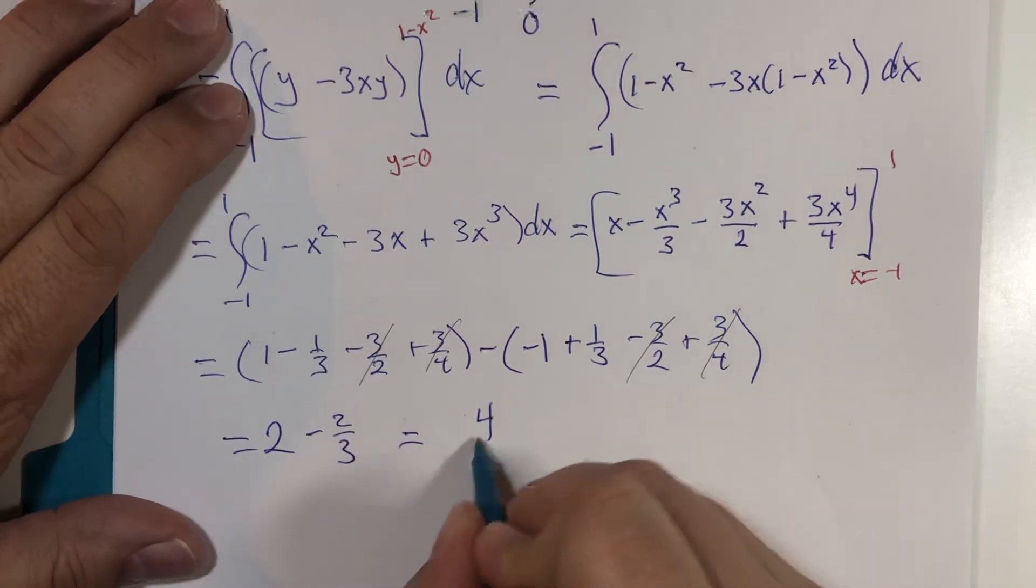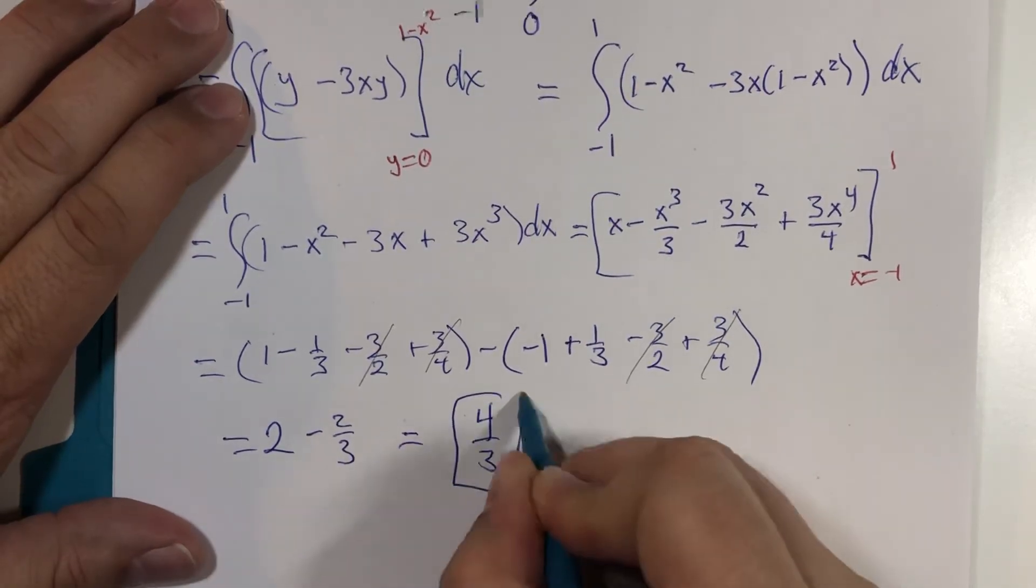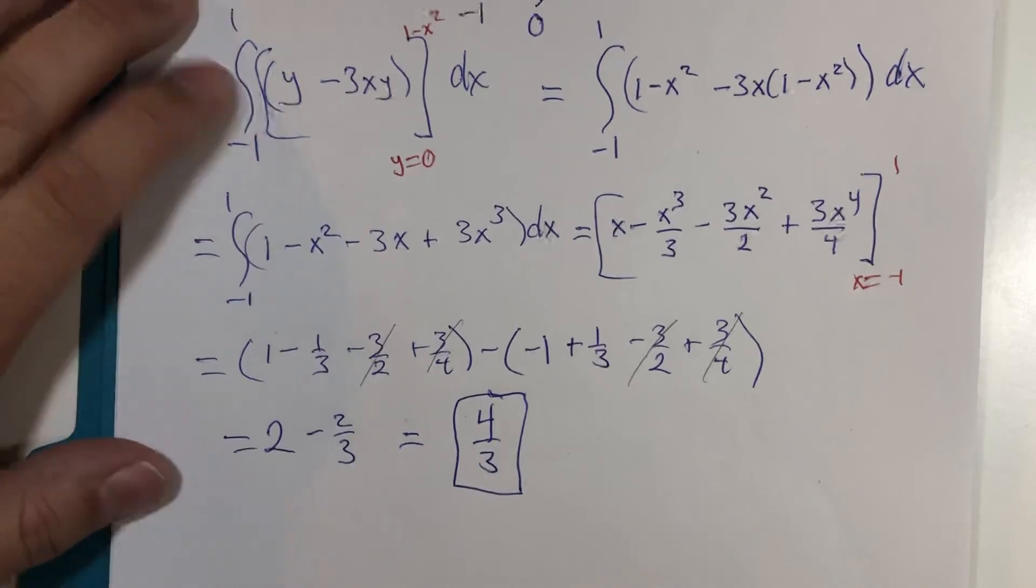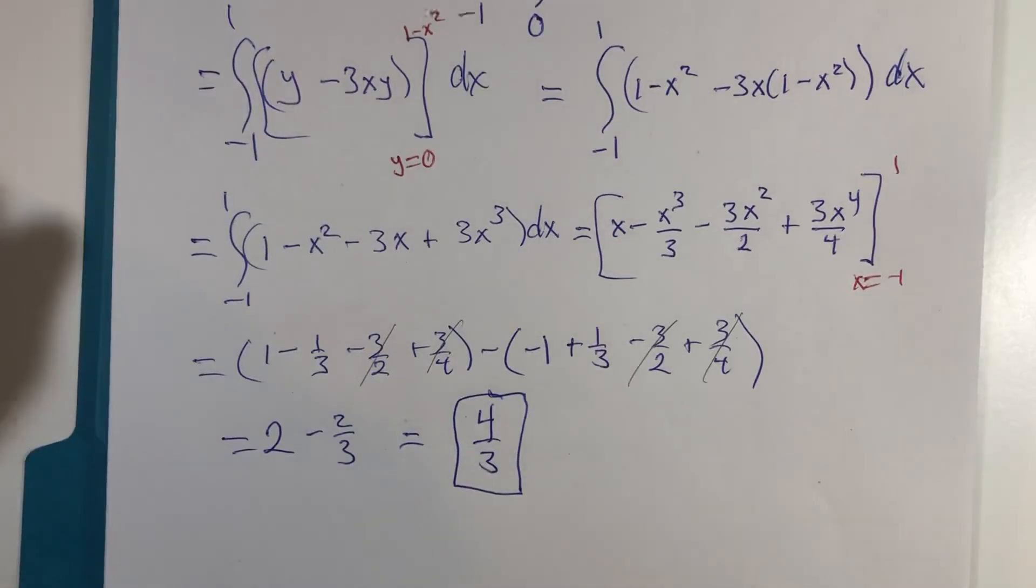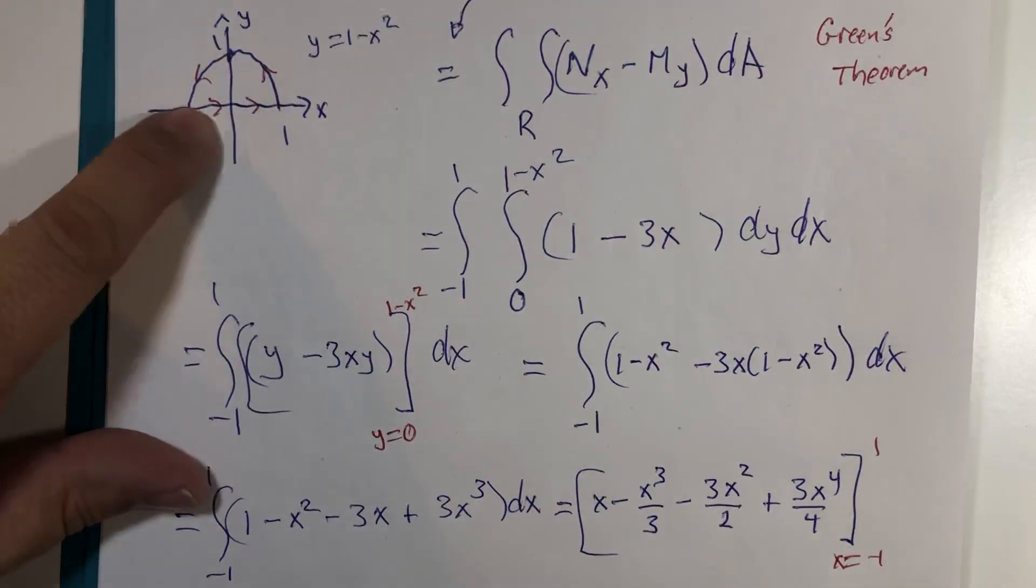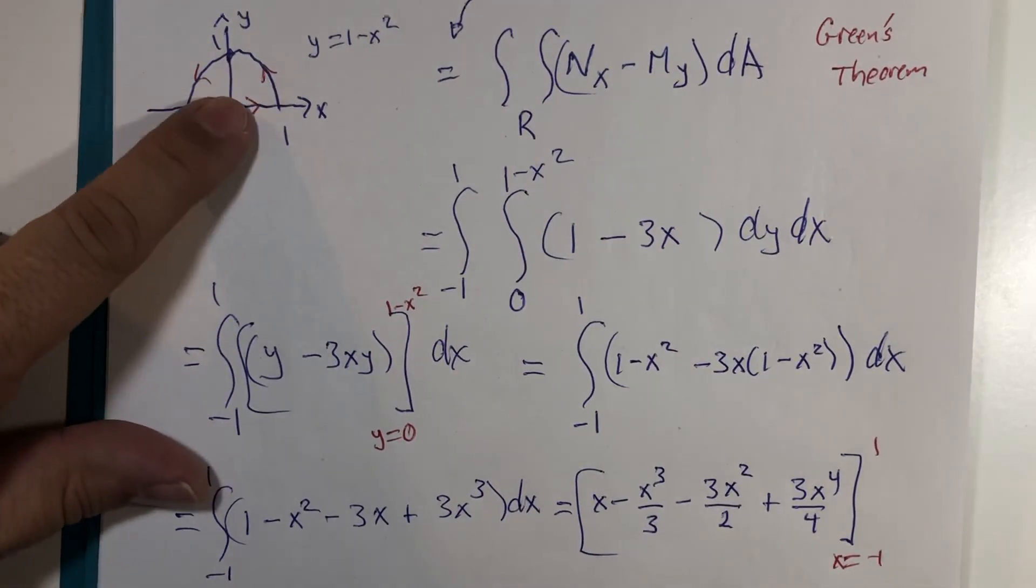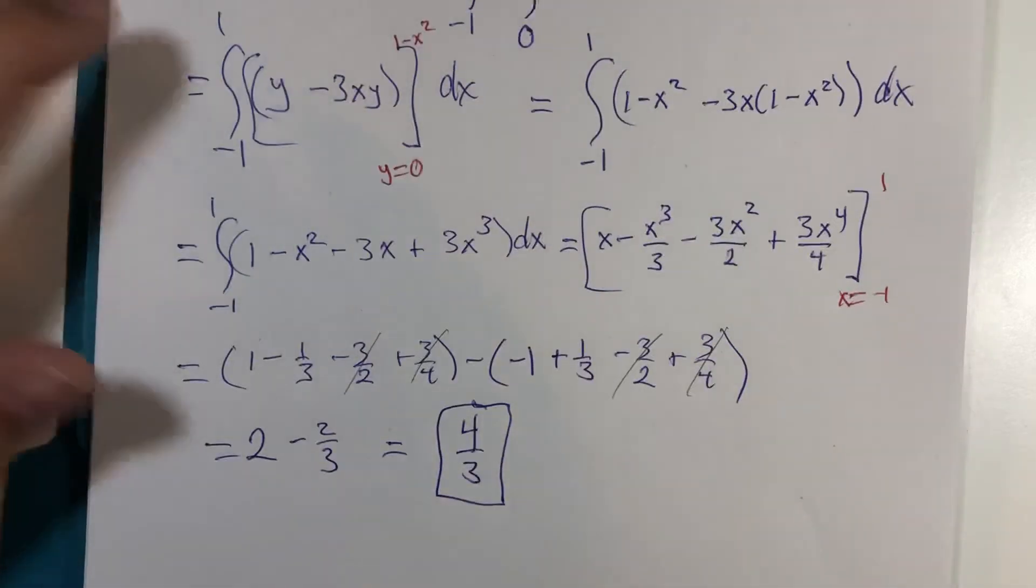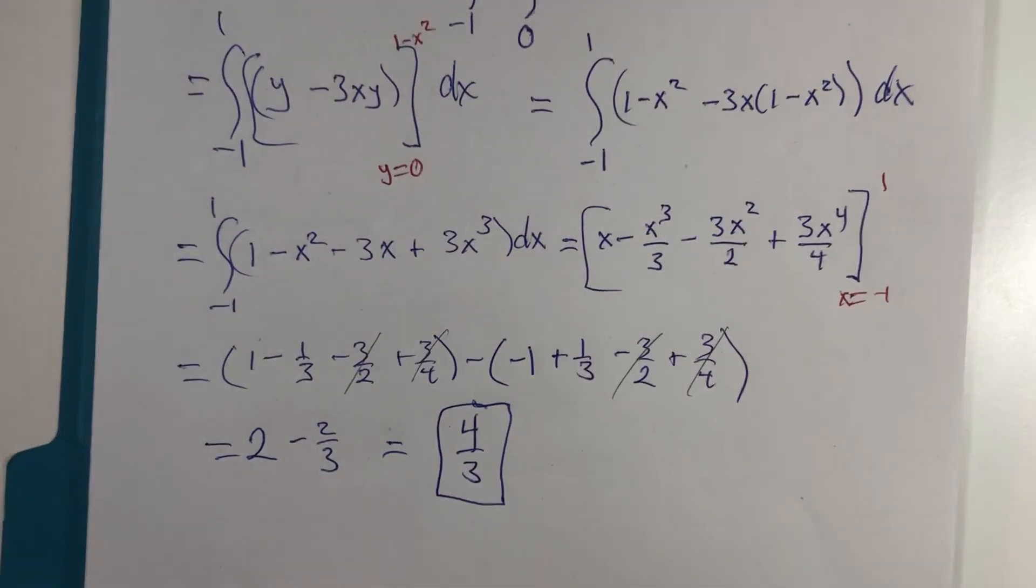I think you're going to find out that you get 4 thirds. That's the quote unquote net work done as you travel around this closed circuit with this vector field acting on that point. 4 thirds. Green's theorem is friendlier than if we had done two line integrals. I won't say you're happy, but I could make you less happy if we had to do it the other way.